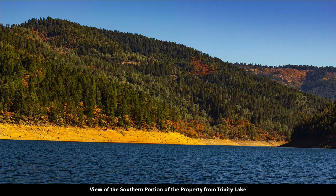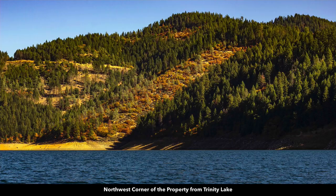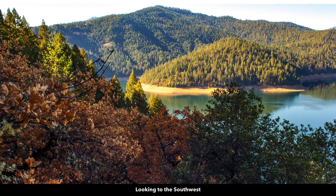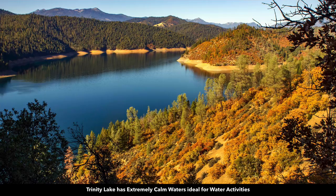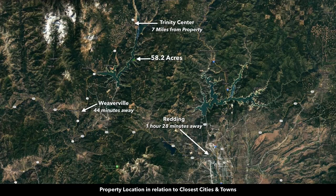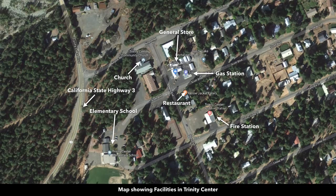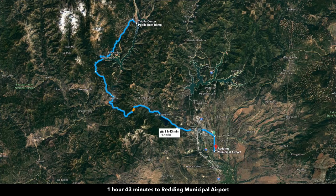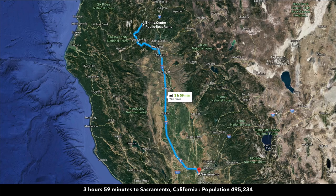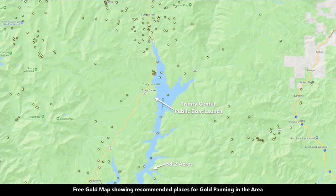These are additional photos from the lake. The northwest corner of the property shows all that fall foliage. Photos from the property looking out at the lake offer breathtaking views of the lake and surrounding mountains. You're also in close proximity to Trinity Center just to the north, with a boat launch. Weaverville is to the south, about 44 minutes away, and Redding is about an hour and a half away with a population of almost 100,000. From the boat launch in Trinity Center it's just over six miles to the property. In Trinity Center you'll find food, fuel, and supplies. Redding has an airport with direct and commuting flights. Sacramento is about four hours away with a population around half a million and an international airport. This area is also popular for gold panning, with many recommended locations near the 58-acre peninsula.